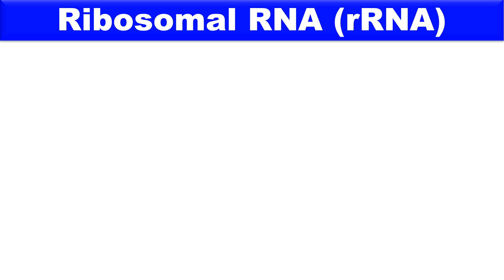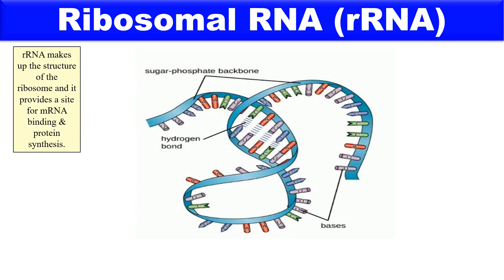The next type is ribosomal RNA, or rRNA, which makes up the ribosome. It is the major RNA present in the cell, constituting about 80% of the total RNA content. Its structure consists of a sugar-phosphate backbone along with nitrogenous bases.